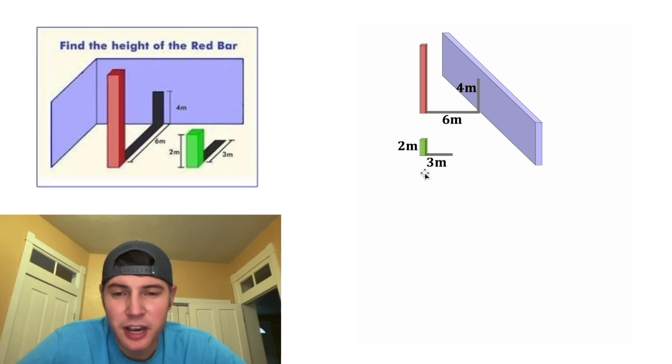The green box is two meters high with the shadow of three. Along the ground, this shadow measures six meters and up the wall it measures four meters. And we're trying to solve for the height of the red bar. So let's call that X.